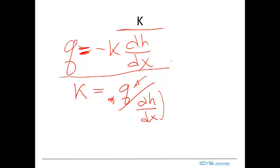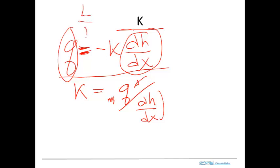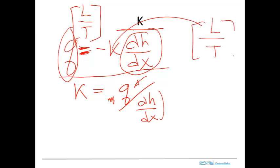The head gradient is dimensionless, and the flux — the volumetric flux — has units of length per time. So hydraulic conductivity must have units of length per time. We might think of it in terms of meters per second, feet per day, meters per day — a length per time.